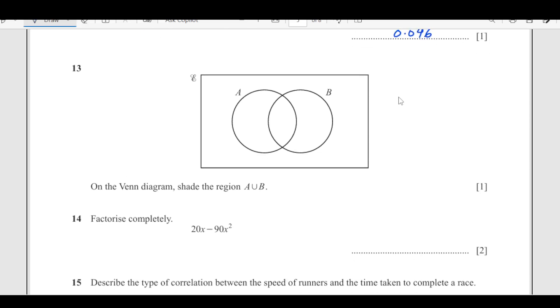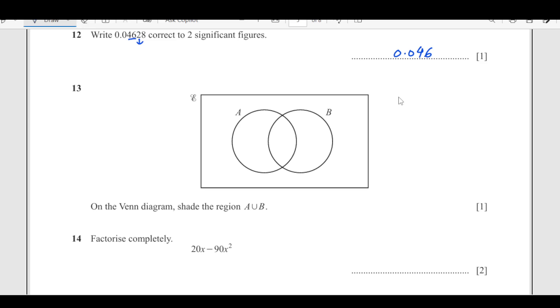On the Venn diagram, shade A union B. A union B means combination of A and B, so we need to shade the whole of A and B.